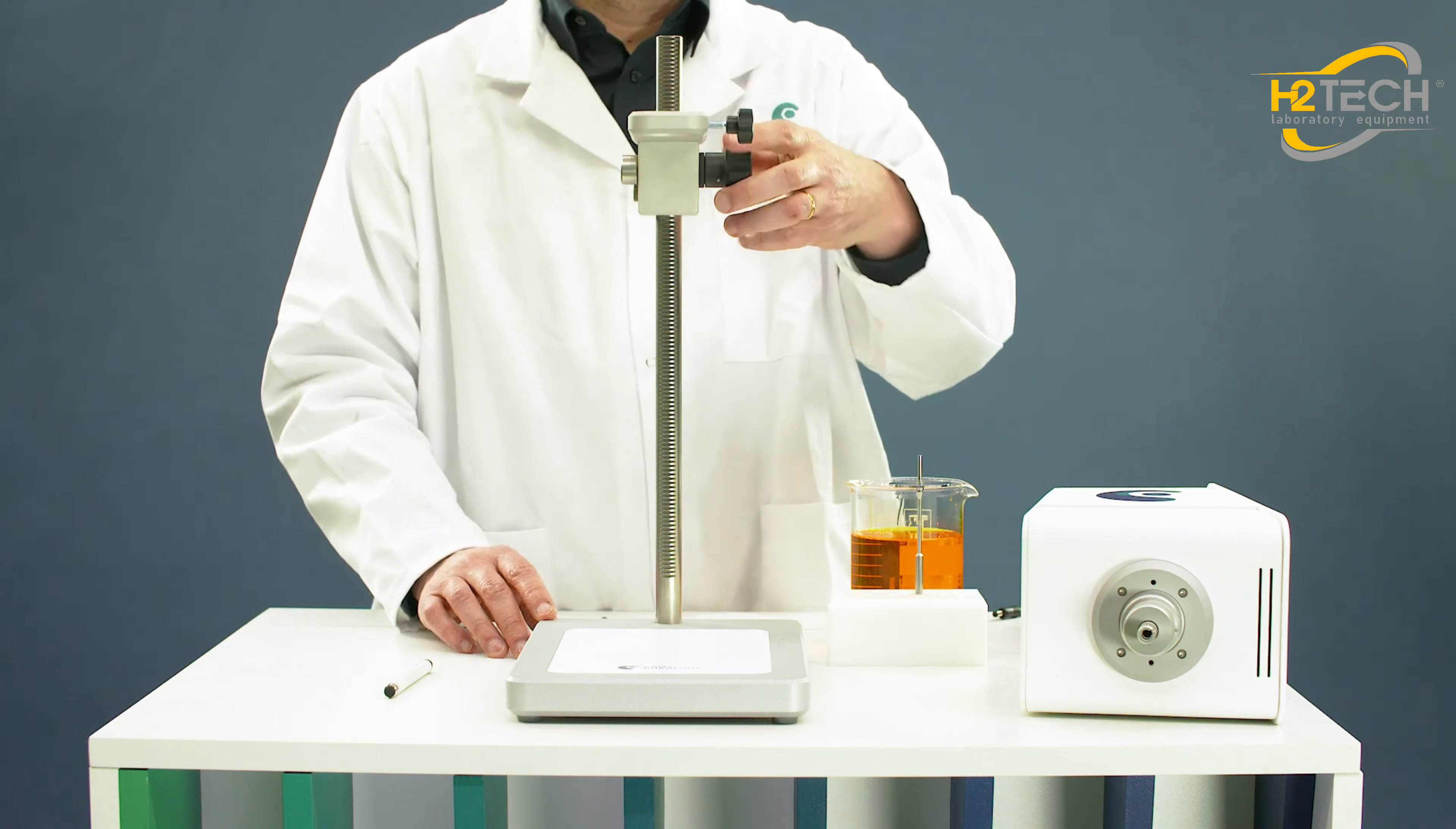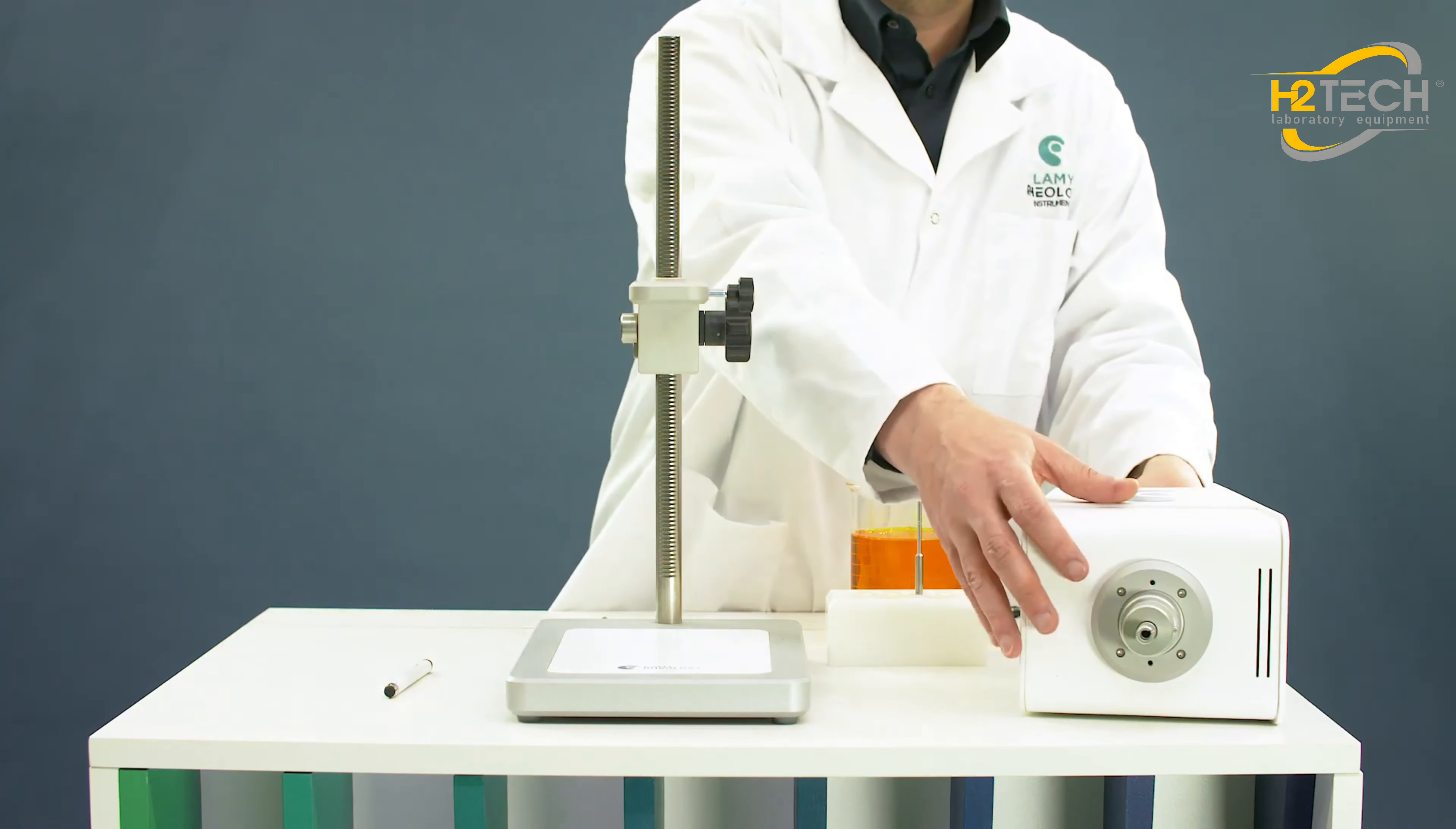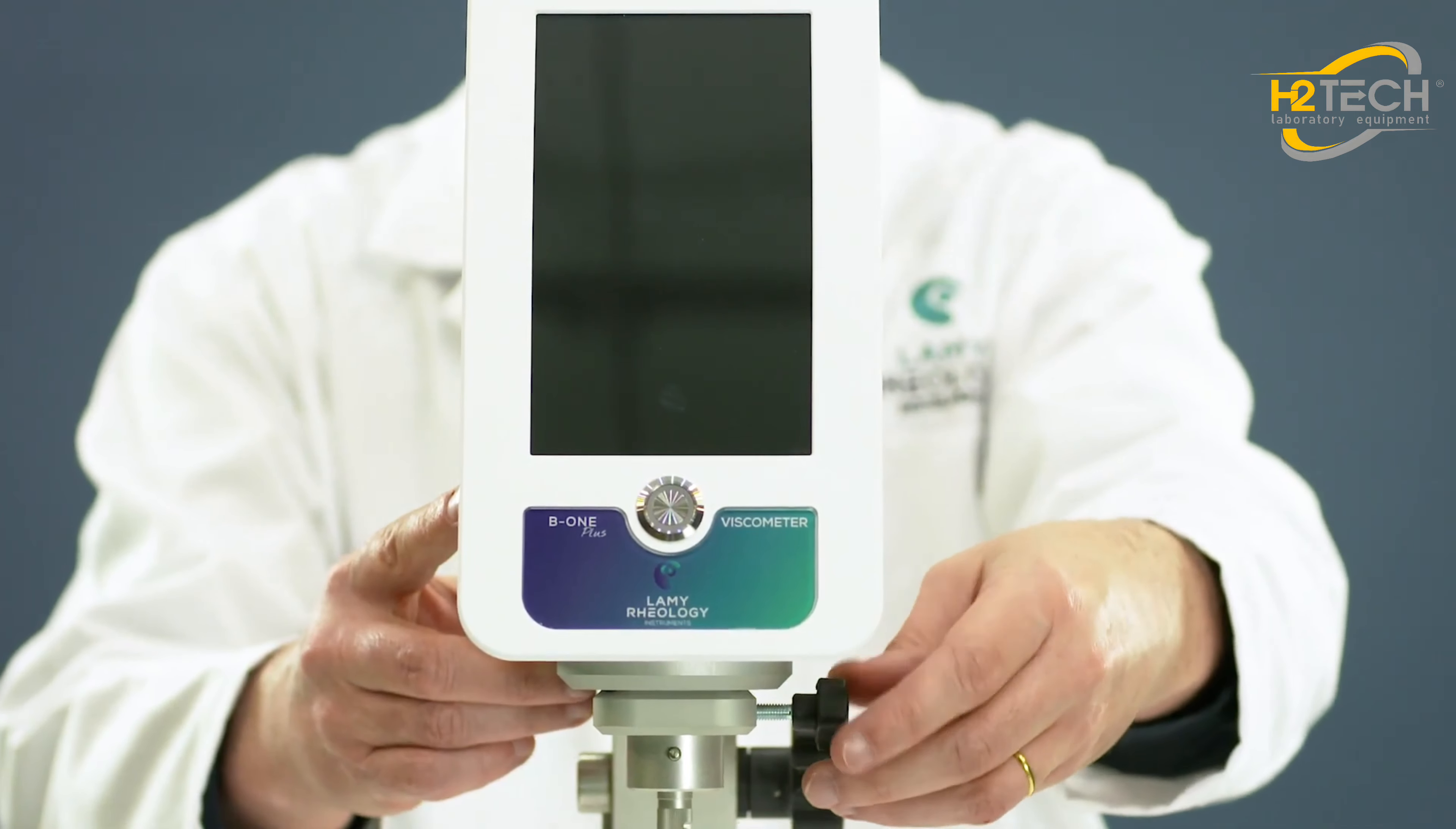Move down the rack stand. Take the measuring head and install it on the arm. Lock the measuring head with the screw.